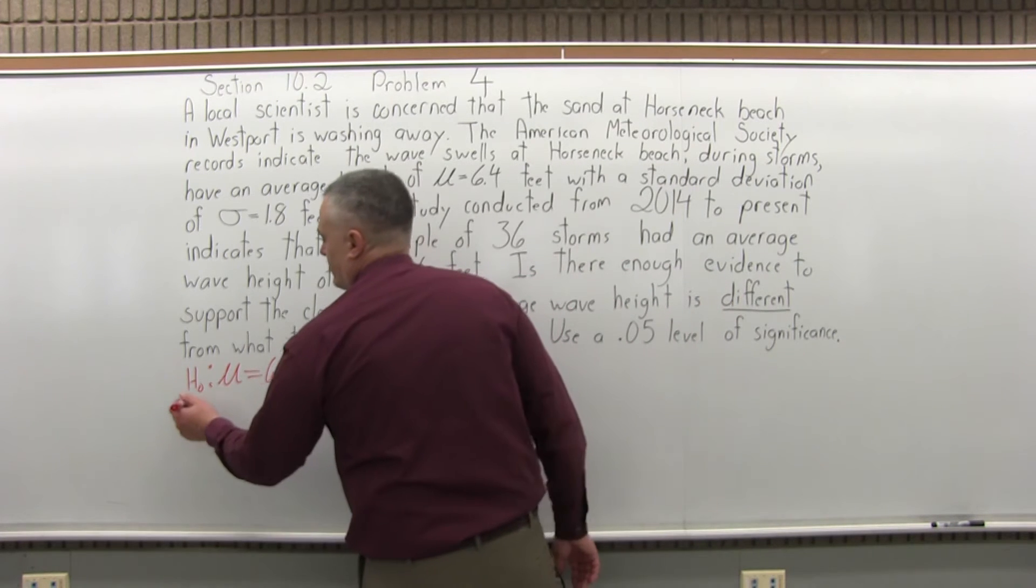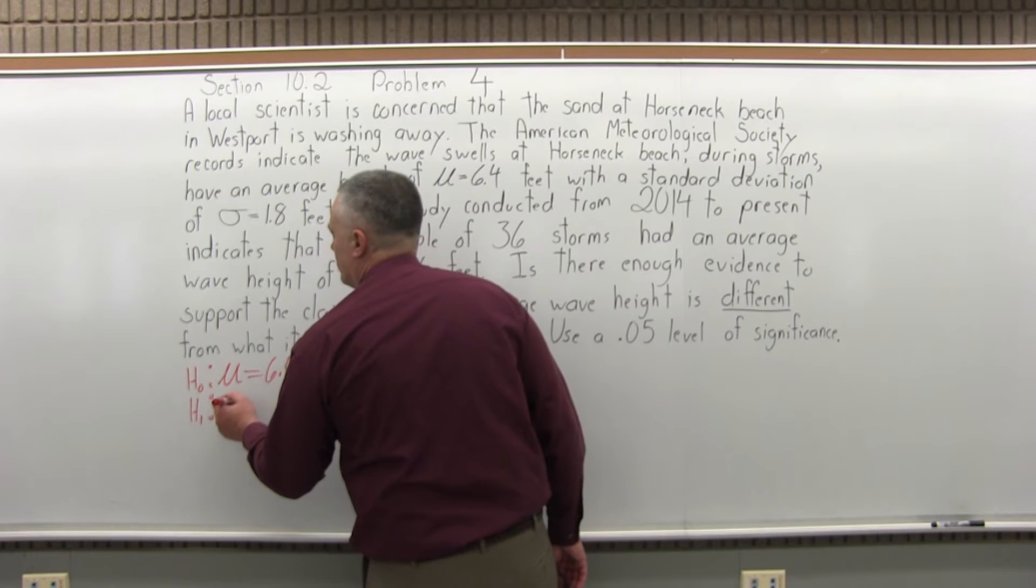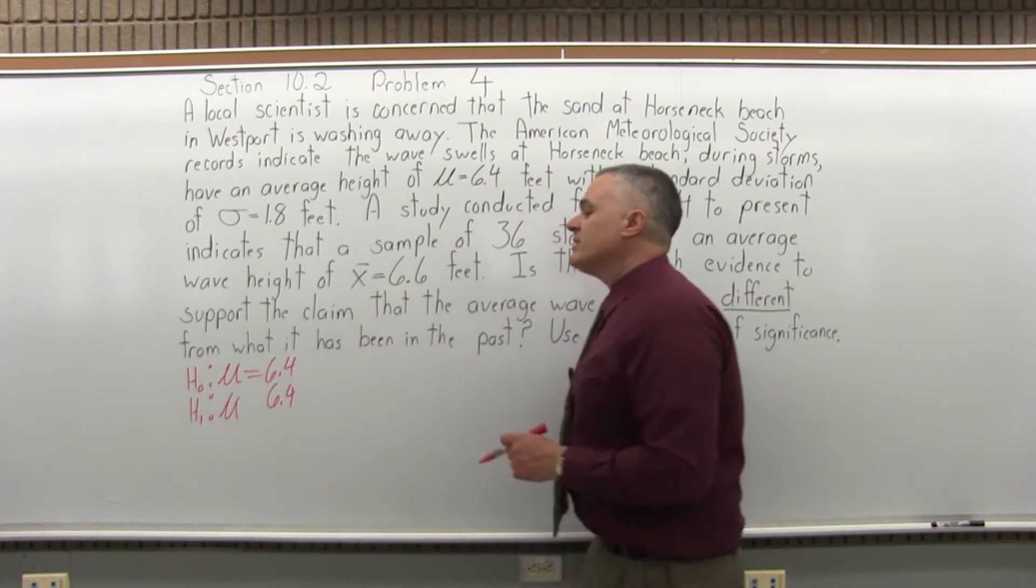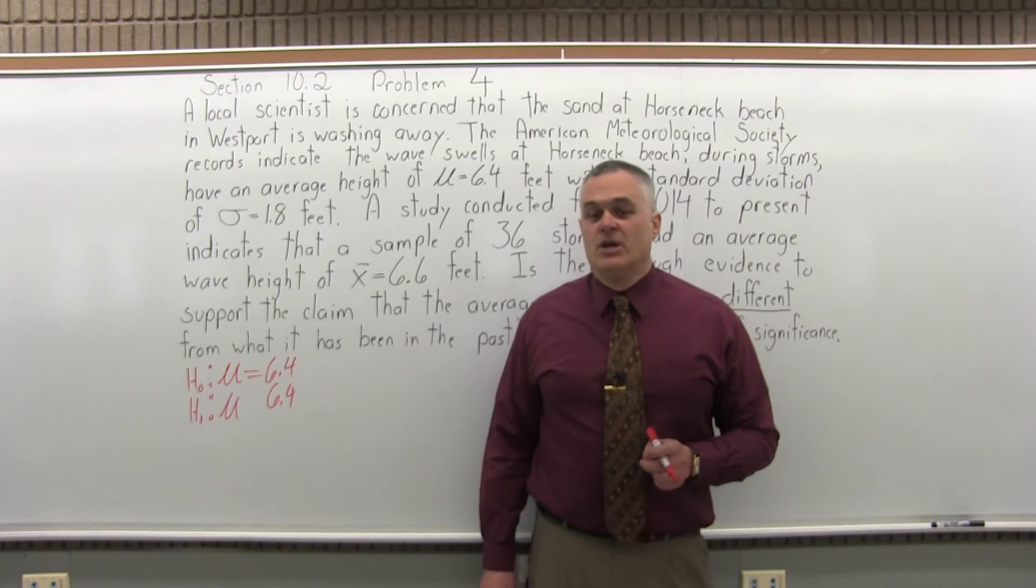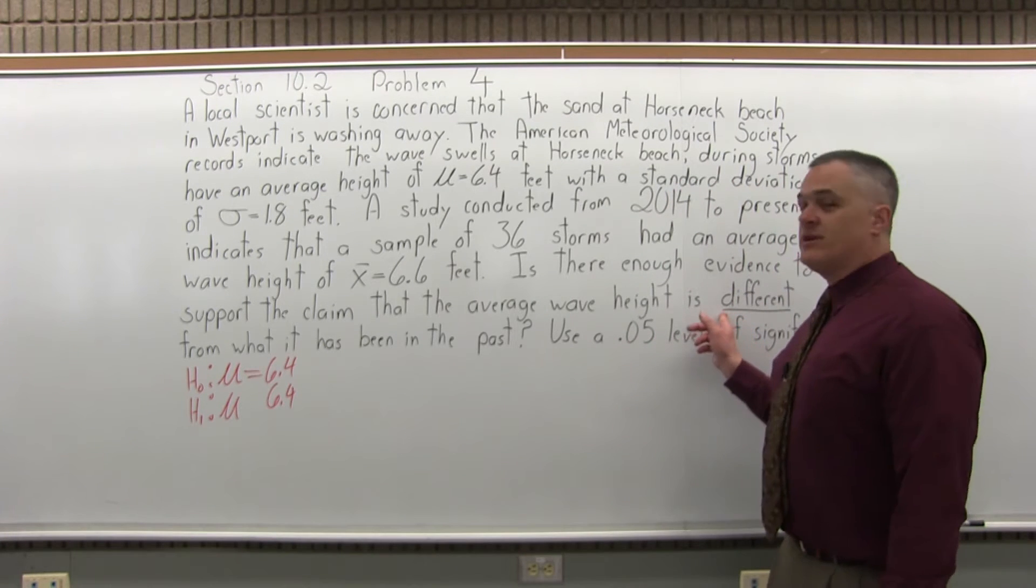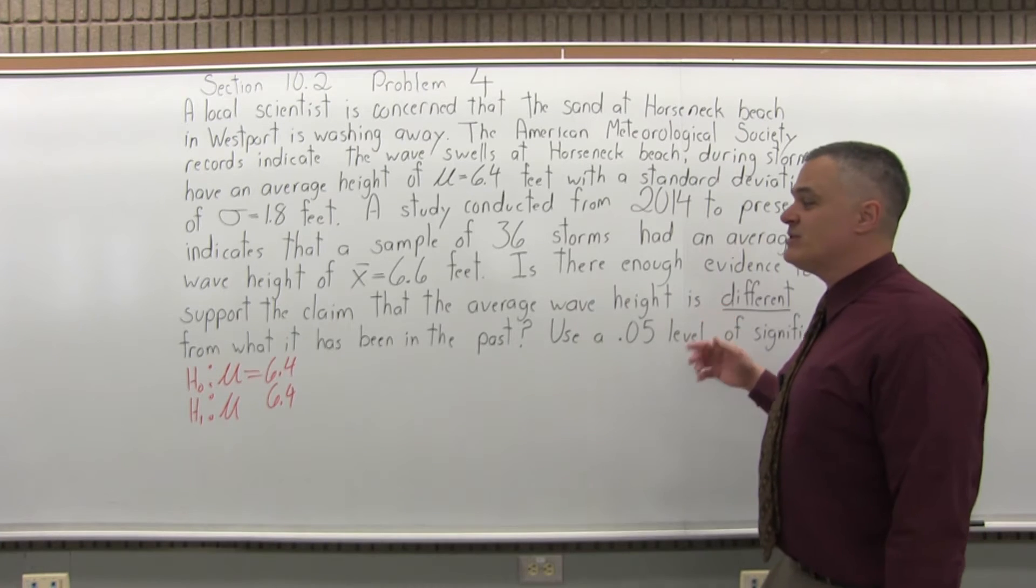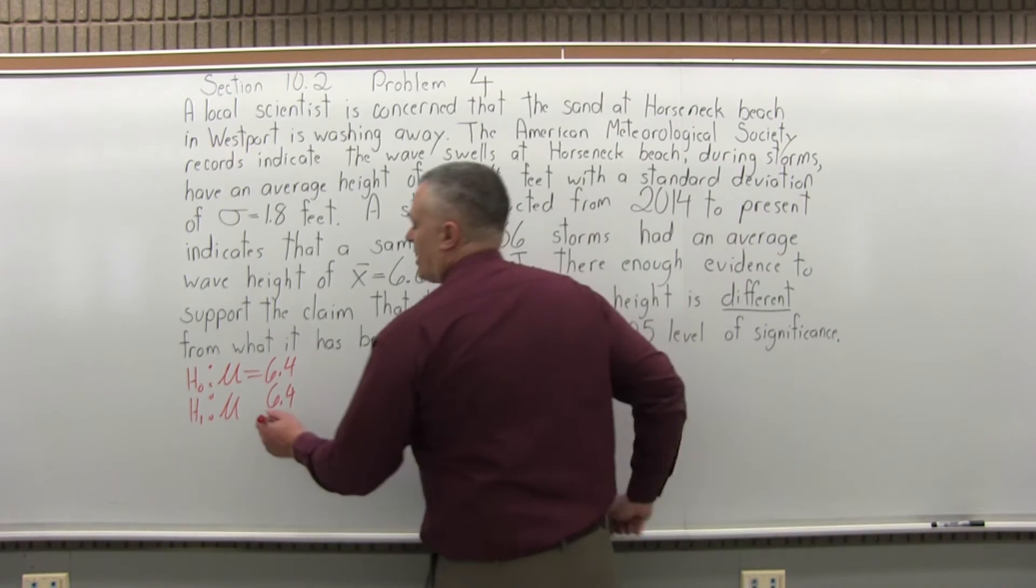Step two, state the alternate hypothesis. So capital H subscript of one, you're going to have mu, I'll leave a blank space, same number 6.4. And you're either going to have a greater than, less than, or inequality sign. So which one is it in this case? Well, it's very clearly mentioned different. It's even underlined in the question. So different just means not equal to. Could be bigger, could be less. So not equal to.